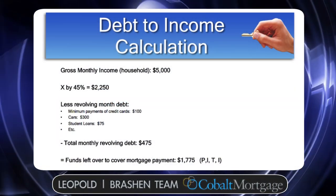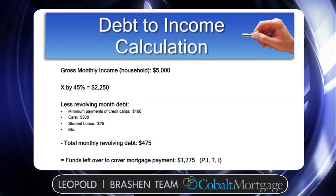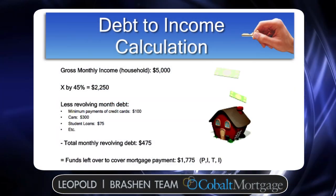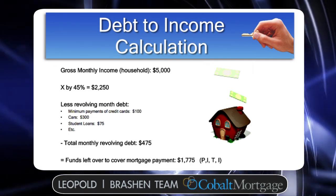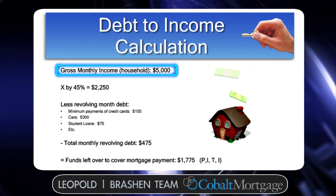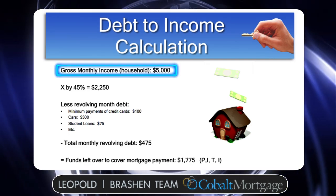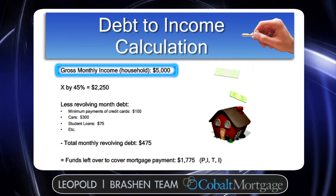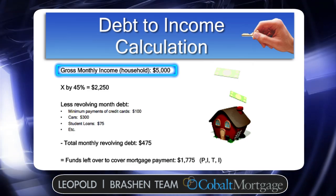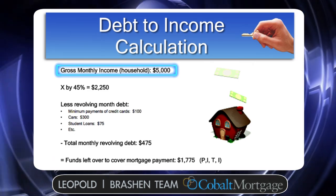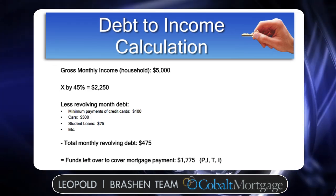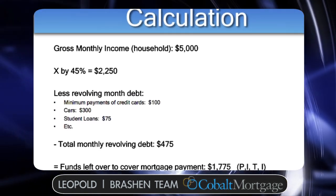I use an example here of a gross monthly income. So let's say it's a household income of $5,000. Gross meaning that's before taxes are taken out and any 401k contributions, anything like that. So gross monthly income of $5,000.